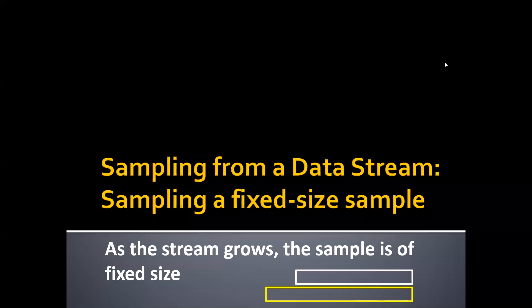Now, let's talk about the second problem: sampling with a fixed size sample. Different from before, in this new case, as the stream grows, the sample is of fixed size.